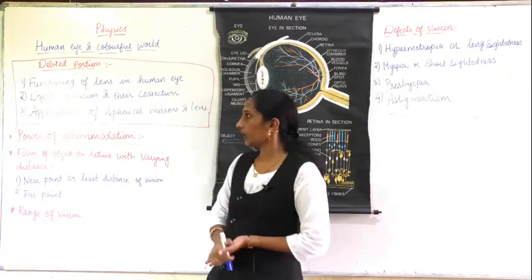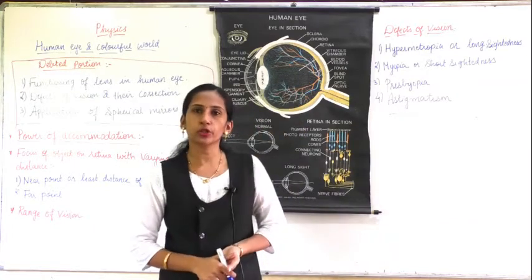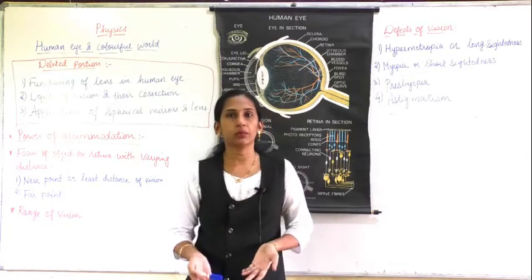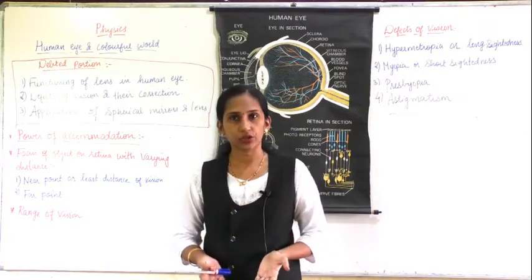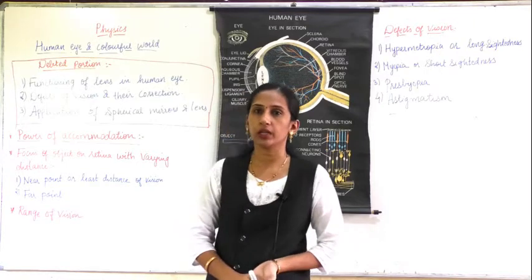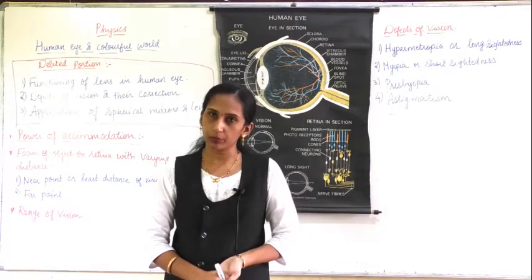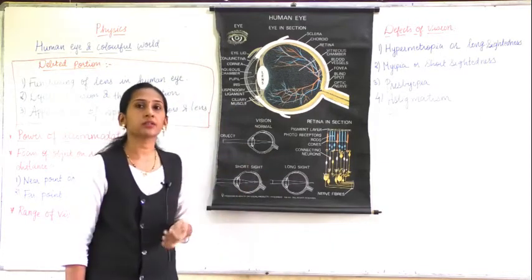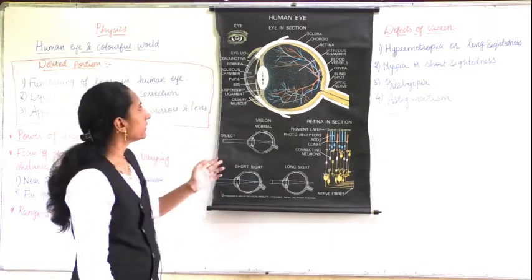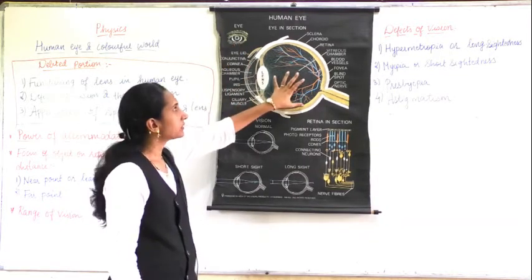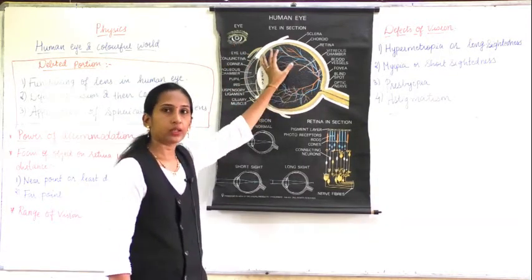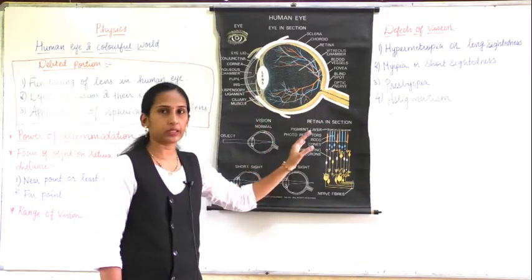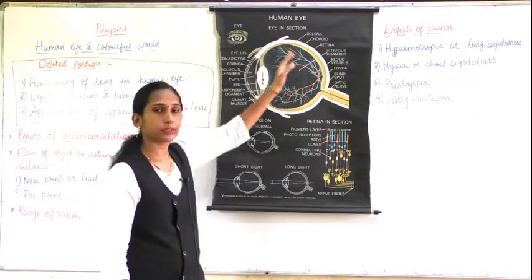This question about the human eye is very important for the exam — it can come as 'write the structure and function of the human eye.' So once again I will revise in short. This is the section of our eye; it is nearly spherical in shape.